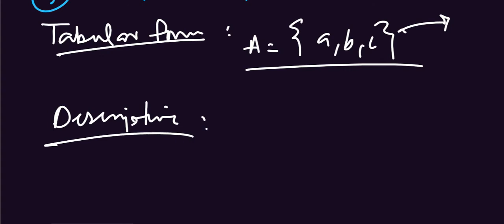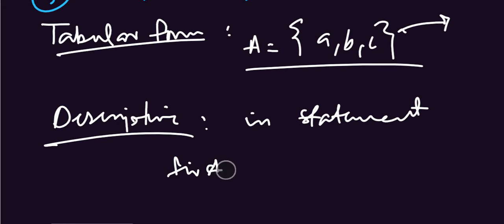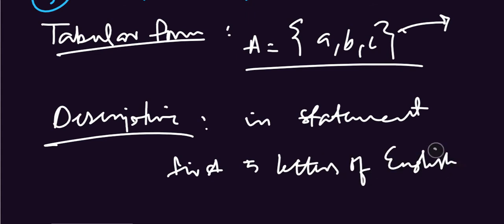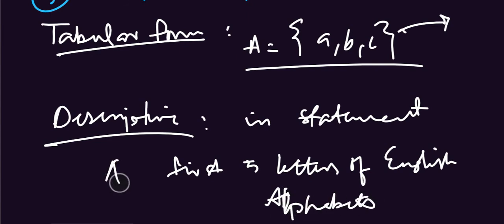The second one is the descriptive method, in which we describe the set in a statement. For example: 'first five letters of the English alphabet.' This is also a notation of a set, but it is called the descriptive method.